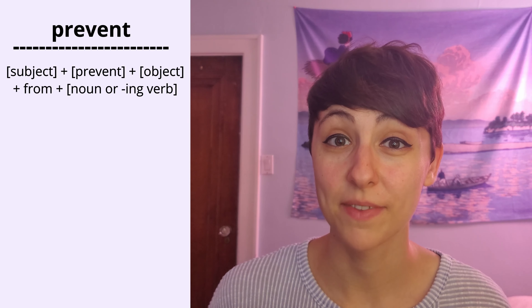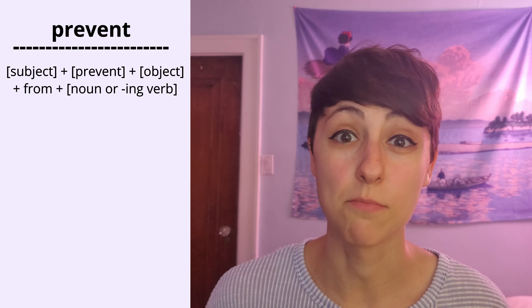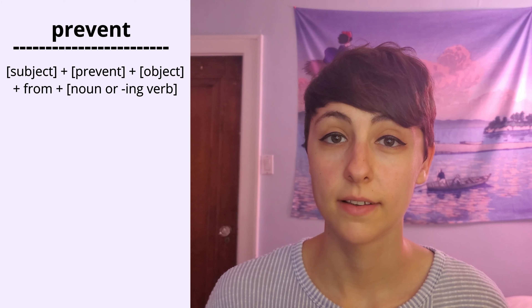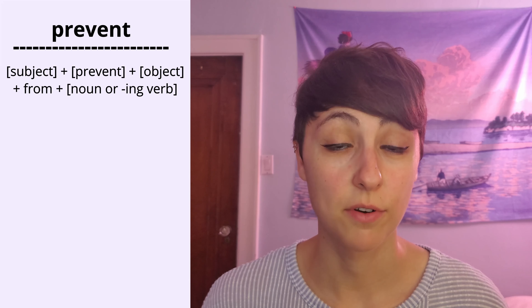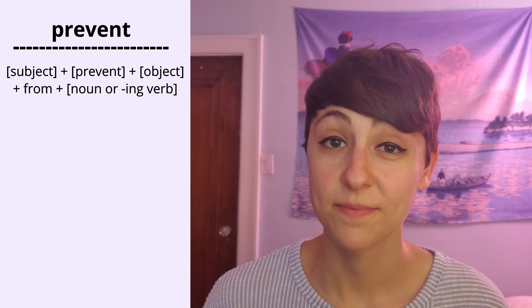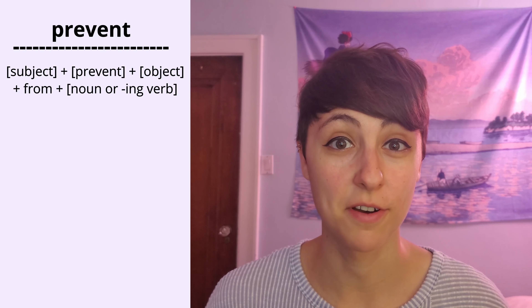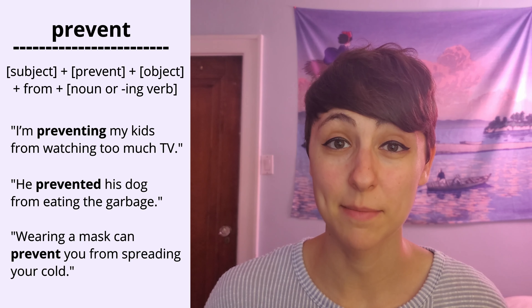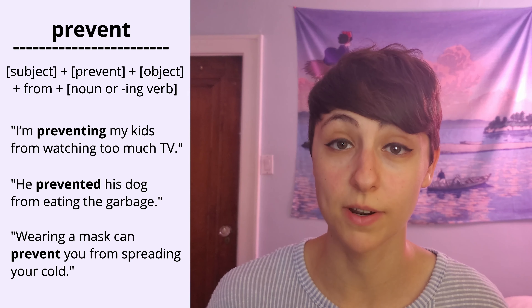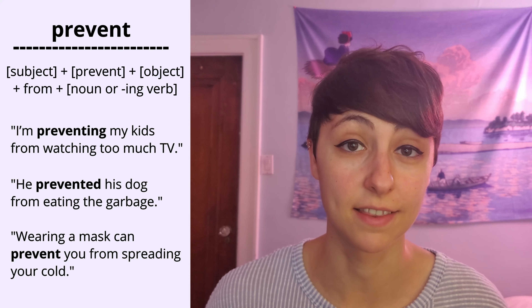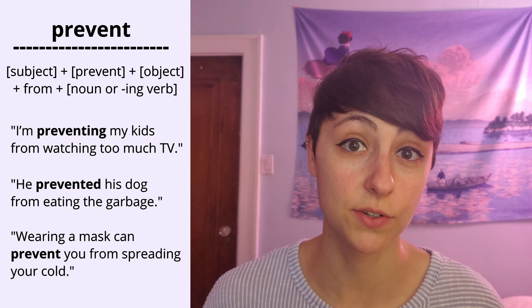However, this is what I think is the most common sentence structure with prevent: subject + prevent + object + from + noun or -ing form of the verb. I'm preventing my kids from watching too much TV. He prevented his dog from eating the garbage. Wearing a mask can prevent you from spreading your cold.